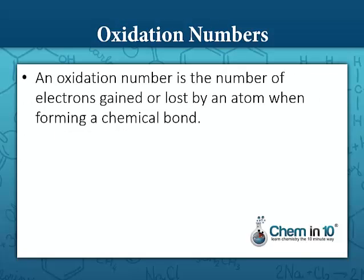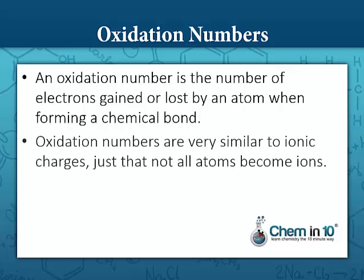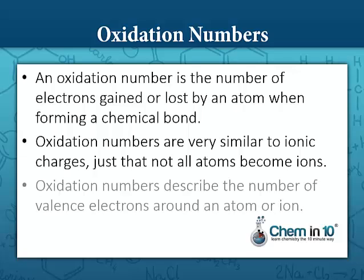To determine reducing and oxidizing agents, or which species is being oxidized or reduced, we need to determine the oxidation numbers of the species. An oxidation number is the number of electrons gained or lost by an atom when forming a chemical bond. Oxidation numbers are very similar to ionic charges, just that not all atoms become ions. Oxidation numbers describe the number of valence electrons around an atom or ion.